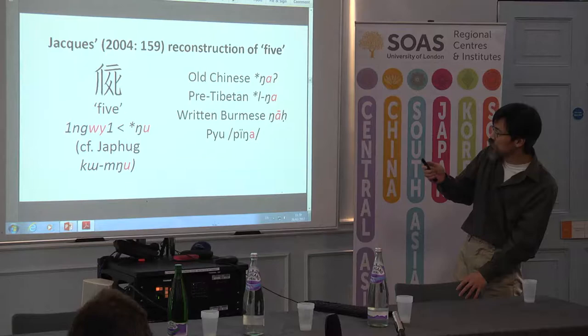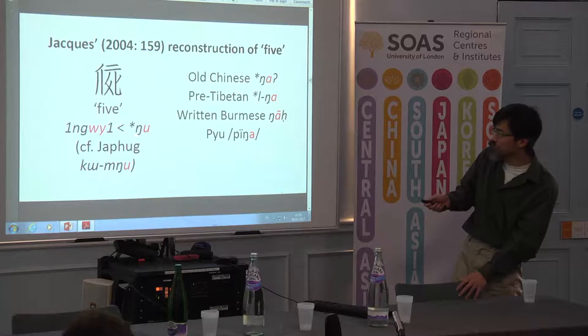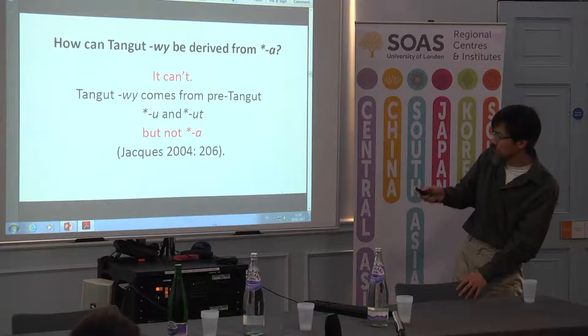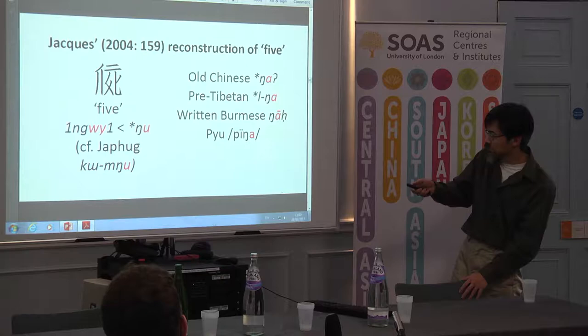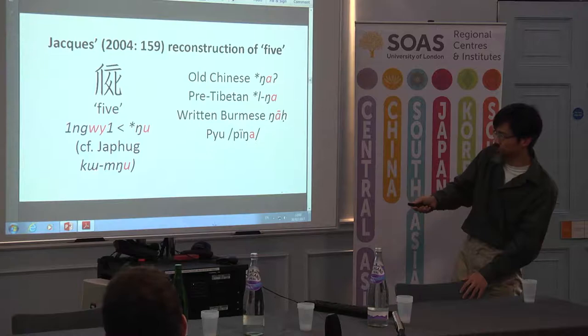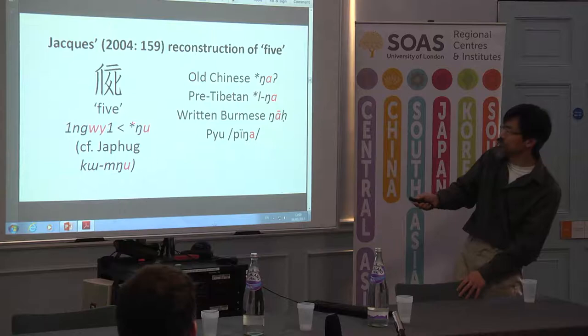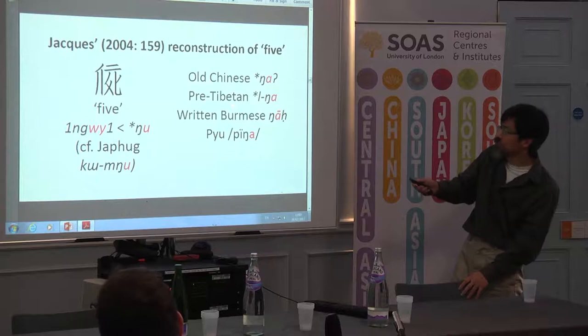Guillaume Jacques' solution to the five problem was to reconstruct Tangut five as having U, which is acceptable according to his rules in which W comes from U or Ut. And Japhug — a language that Shun Gong has referred to, which is a relative of Tangut — has U in its word for five. So this is kind of plausible. But we still have another problem: Japhug and Tangut agree, but they still don't agree with all the other languages.